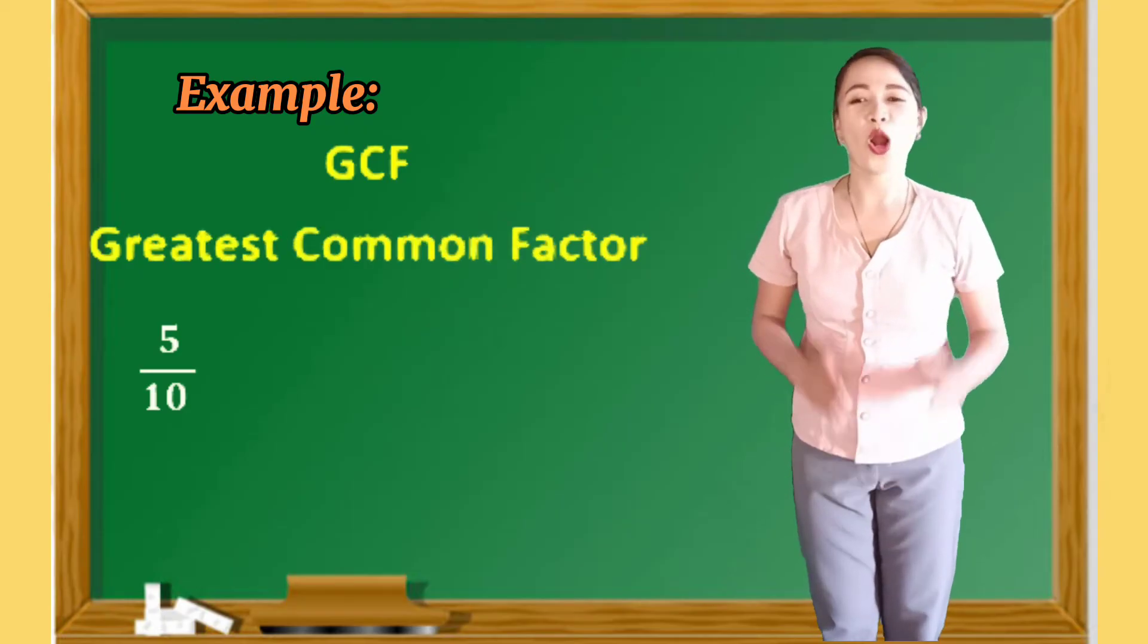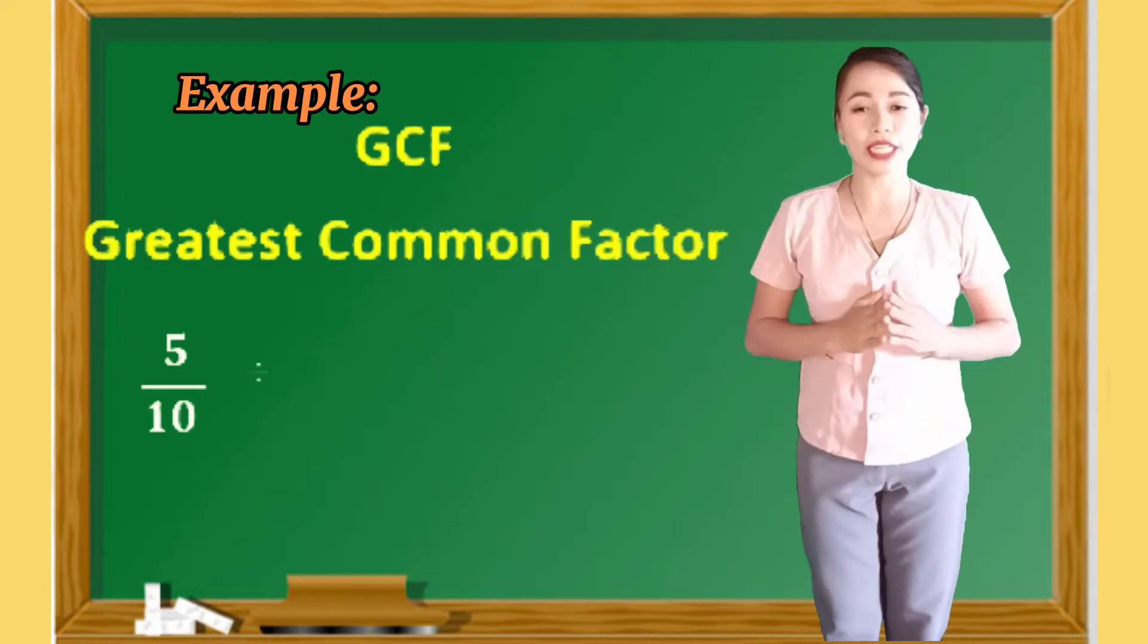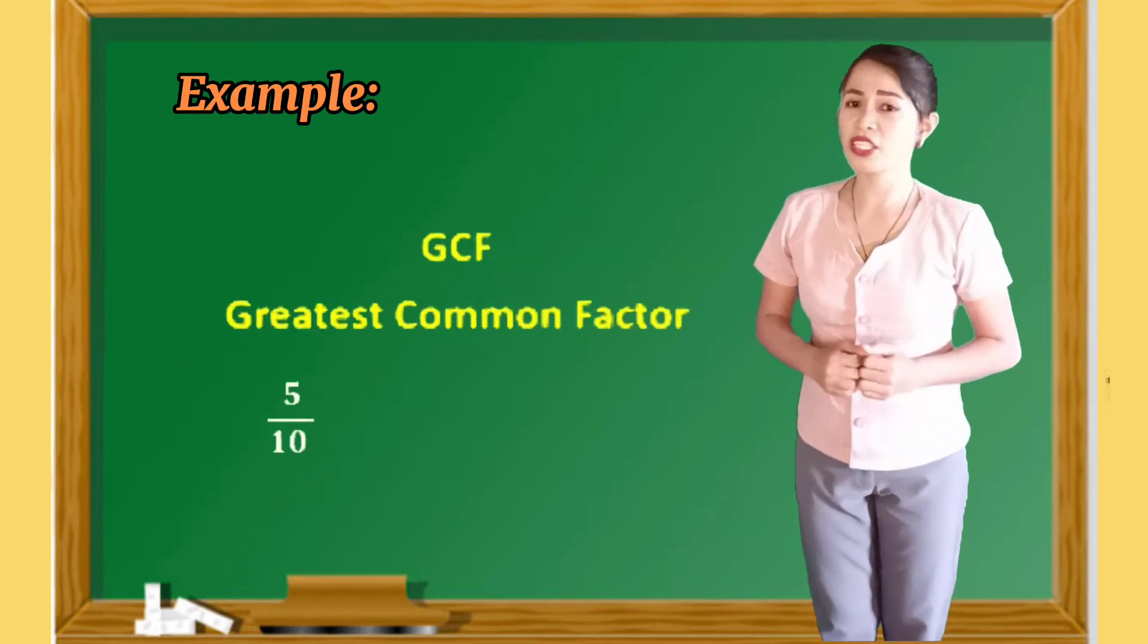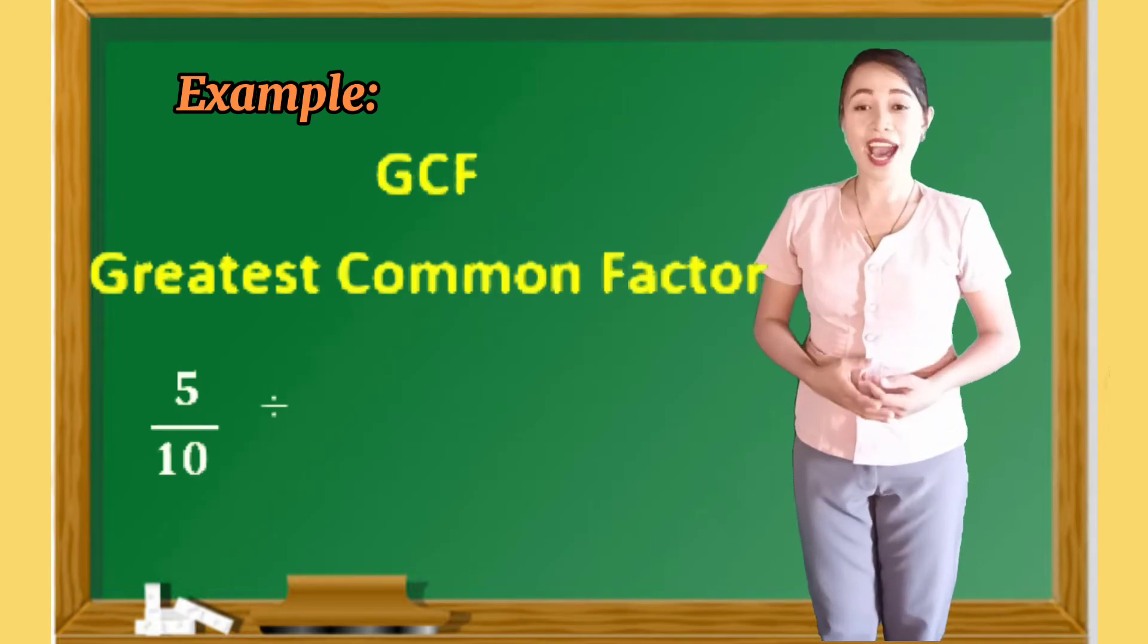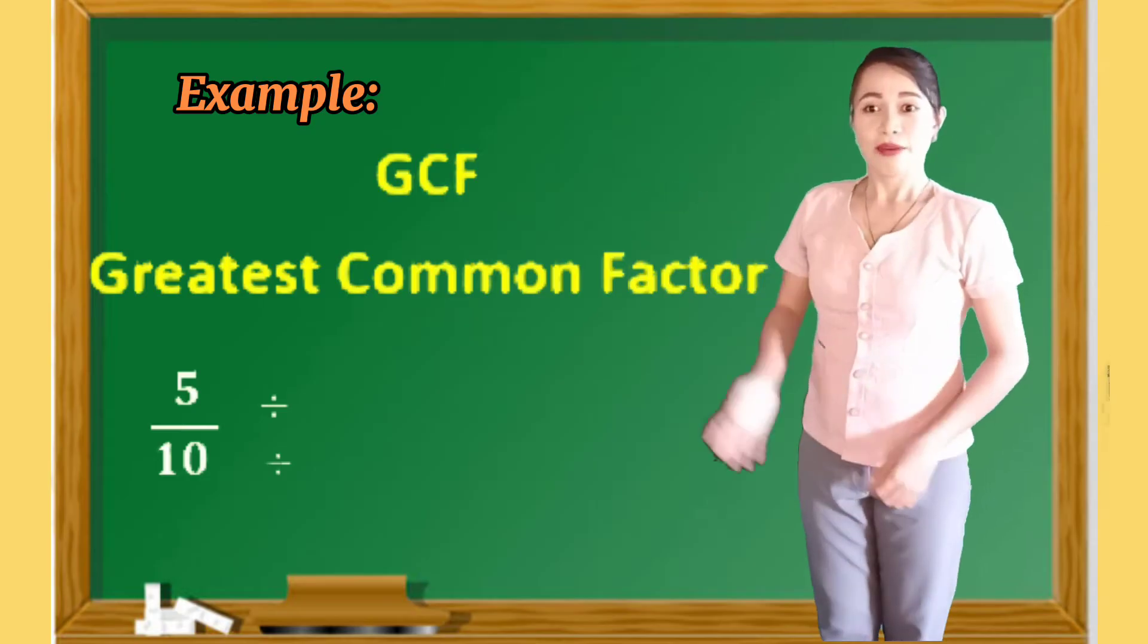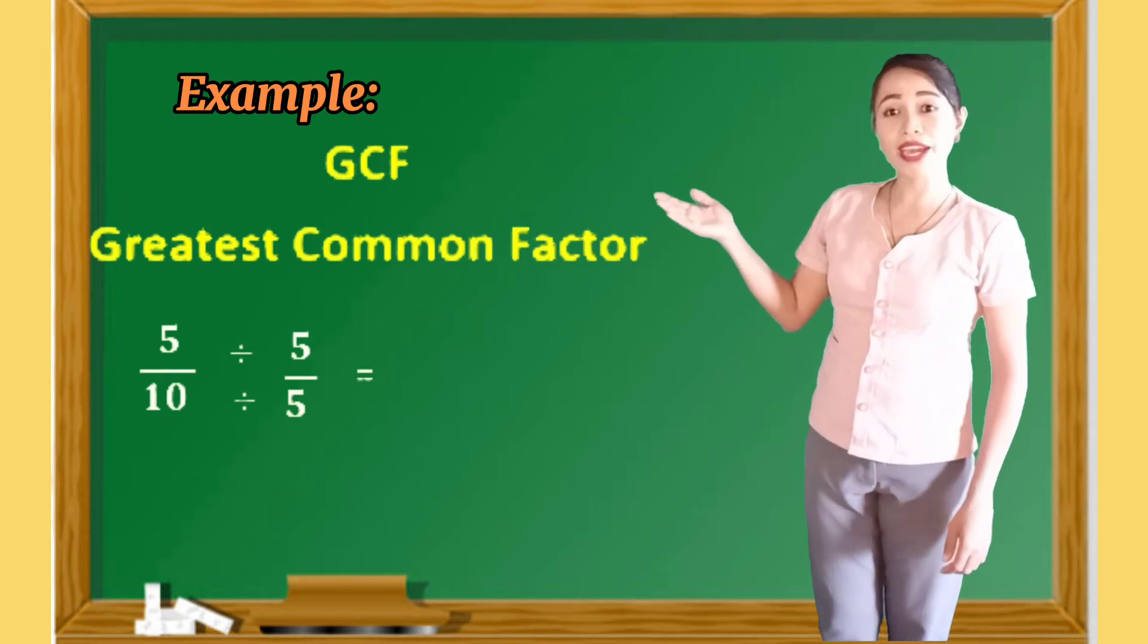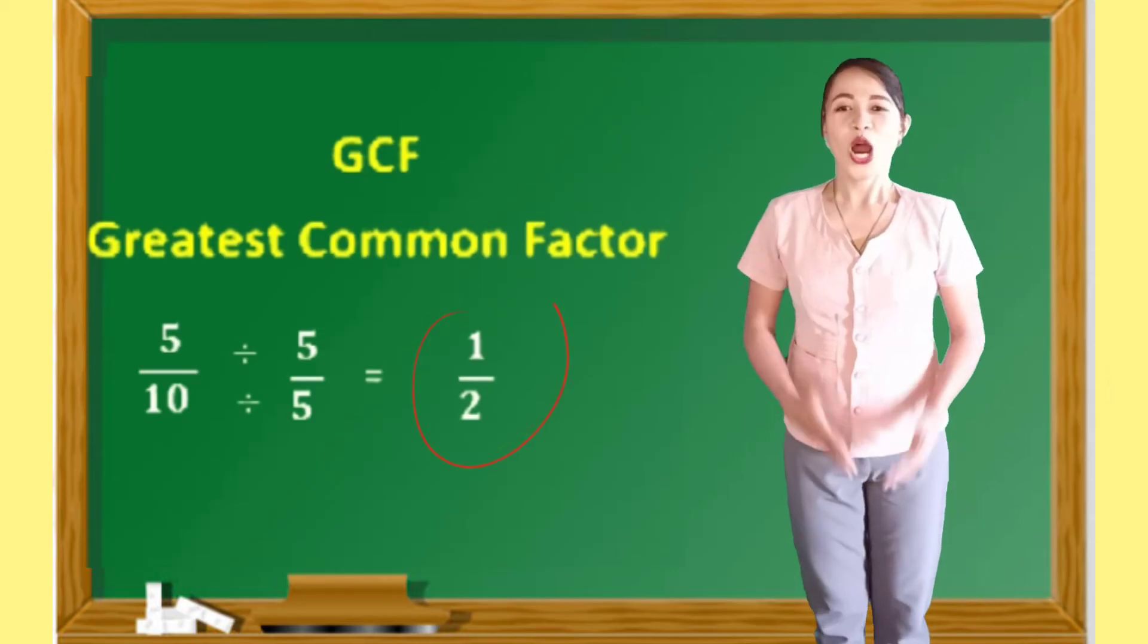Yes, I can hear you. Alright, by dividing the numerator and denominator with the greatest common factor, we can reduce this one into lowest term. So, what do you think would be the GCF of 5 and 10? Correct! We have 5. So, by dividing both 5 and 10 by 5, so 5 divided by 5 is equals to 1, and 10 divided by 5 is equals to 2. So, we have 1 half.